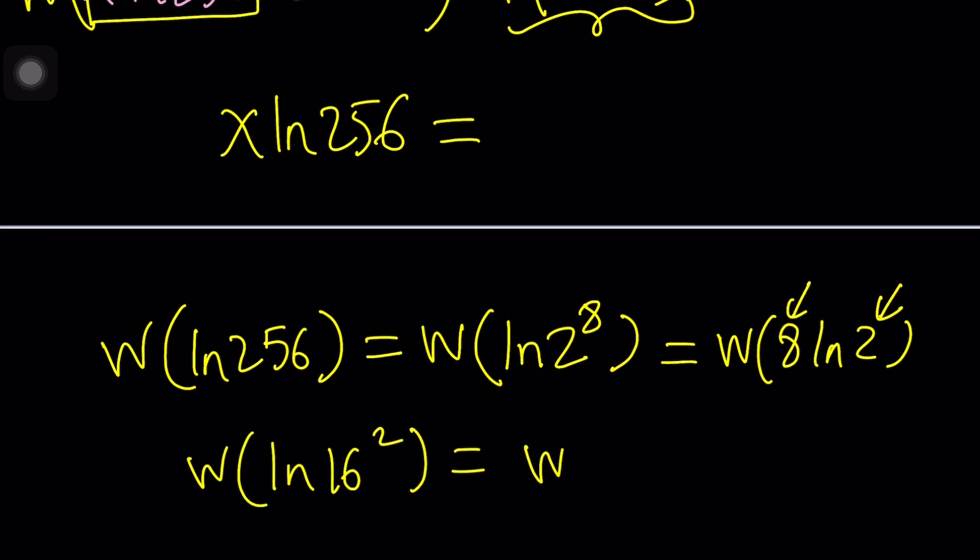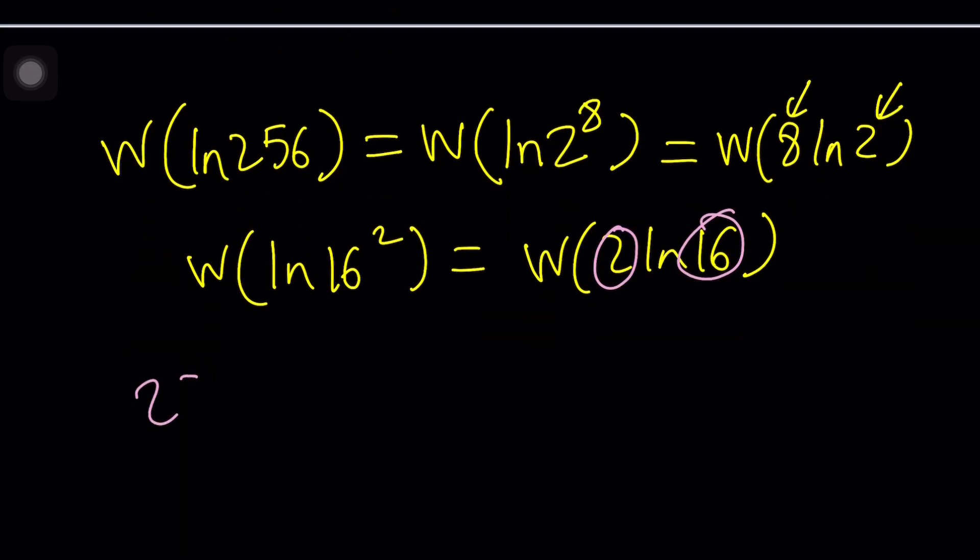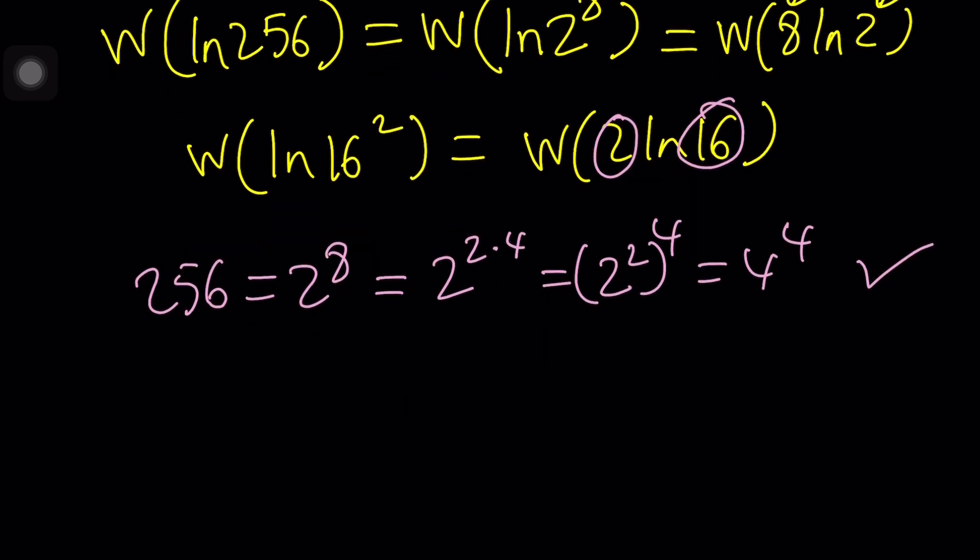How can they be the same? Well, 256, if it can be written as 2 to the 8th, then we can kind of write this as 2 to the power 2 times 4, and then that can be written as 2 to the power 2 to the power 4, and that is 4 to the power 4. That's another secret sauce.